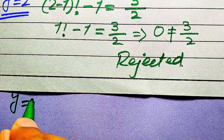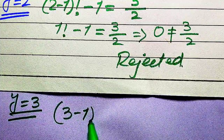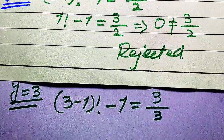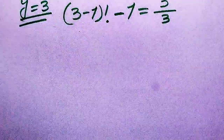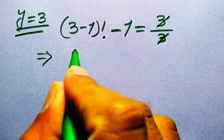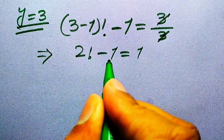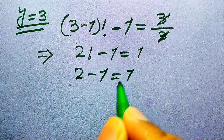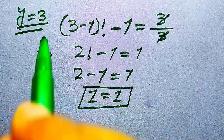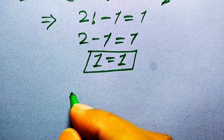Now we try y equals 3. Substituting gives (3 minus 1) factorial minus 1 equals 3 divided by 3. The 3's cancel on the right, giving 2 factorial minus 1 equals 1. Since 2 factorial equals 2, we get 2 minus 1 equals 1, which gives 1 equals 1. This is satisfied, so y equals 3 is the solution.